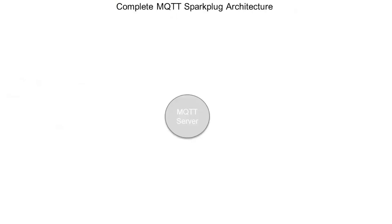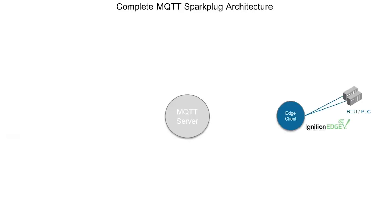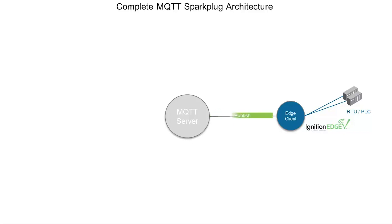Looking at our architecture now with Sparkplug, we still have our central MQTT server infrastructure and MQTT clients at the edge. If this was Ignition Edge connected to PLCs, RTUs, and flow computers, we could establish our connection, connect into our MQTT server, subscribe to information we're interested in, and start publishing all of those process variables using Sparkplug.